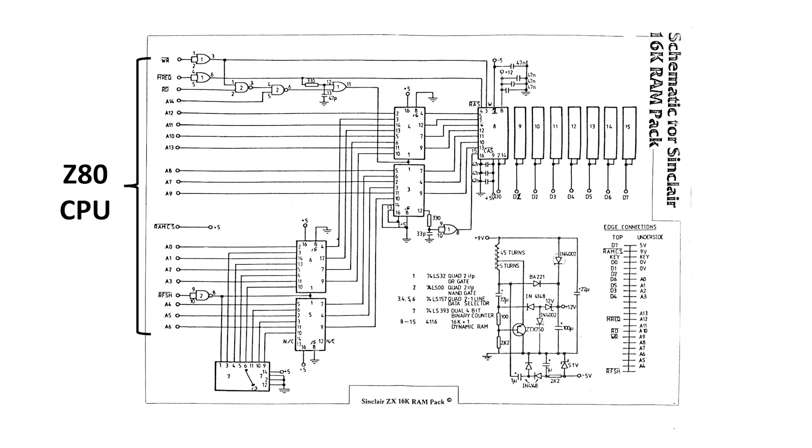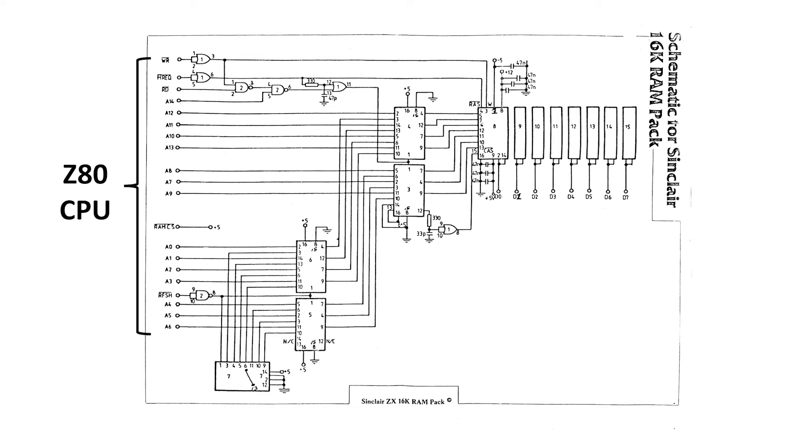This is the schematic diagram for the ZX81 16K expansion pack. It has its own circuit for generating plus 12 and minus 5 volts for the DRAM chips, but I'm not going to go over it in detail here. Next, we have a bank of 8 4116 DRAM chips.